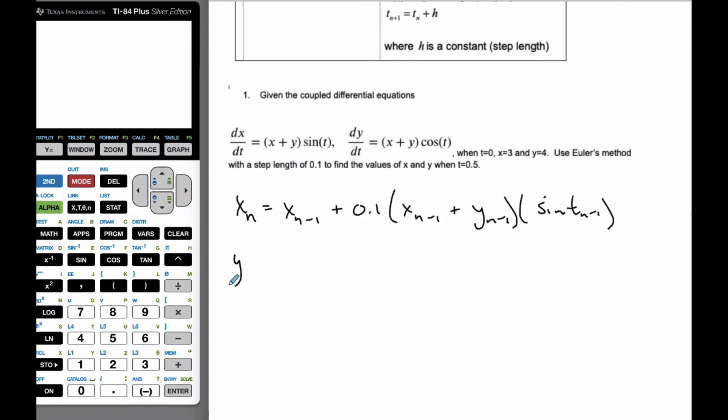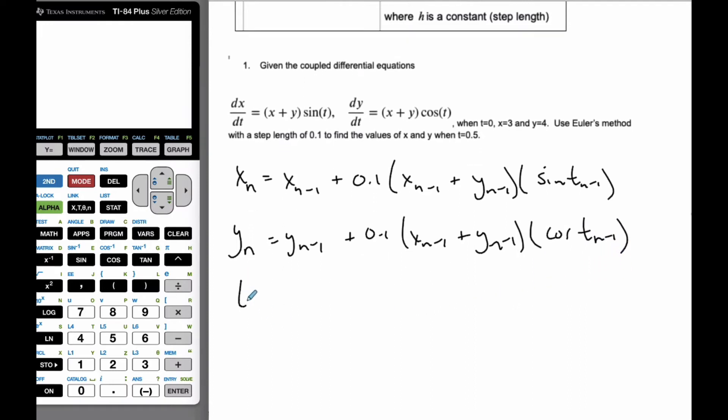And then I'm also going to do yn is going to be yn minus 1 plus 0.1, and then it's going to be xn minus 1 plus yn minus 1 times the cosine of tn minus 1. And then finally tn is going to be tn minus 1 plus 0.1. This is the step. Each time I'm going to add the step.